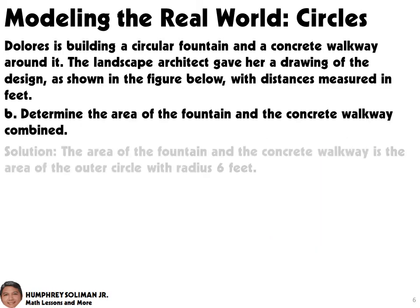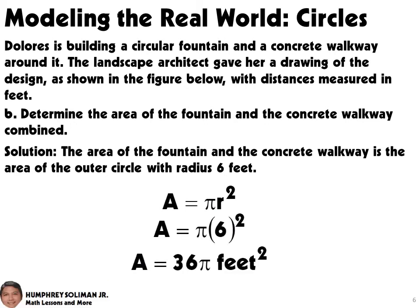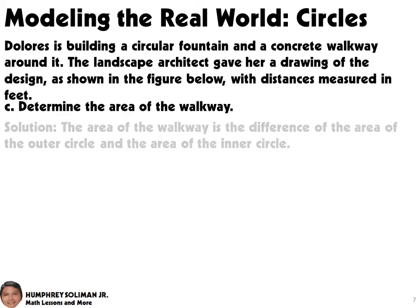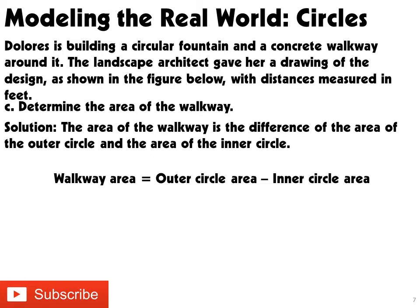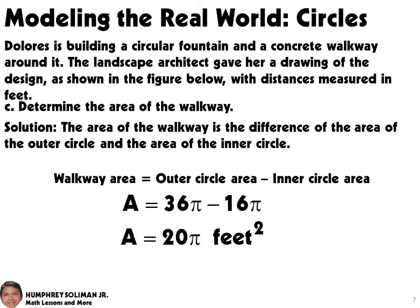In solving letter B, we will use the equation for the area of a circle. This will give us an area of 36π square feet for the area of the fountain and the concrete walkway combined. In solving letter C, we need to subtract the area of the inner circle from the area of the outer circle. This will give us the area of the walkway equal to 20π square feet.